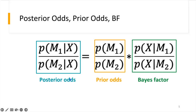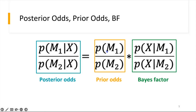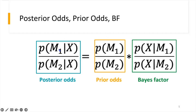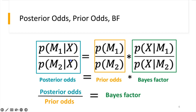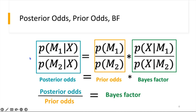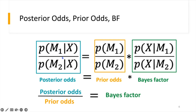Therefore, we can take the direct ratio of the two models such that our posterior odds are equal to our prior odds multiplied by the Bayes factor, which is also the ratio of the marginal likelihoods. The prior odds are being updated by the Bayes factor to get the posterior. We can also compute the Bayes factor as the posterior odds divided by the prior odds. Note that when the prior odds are equal to one, the Bayes factor is equivalent to the posterior odds.